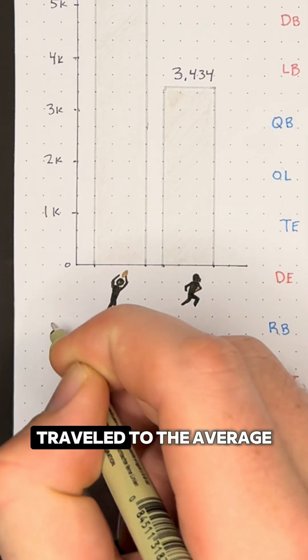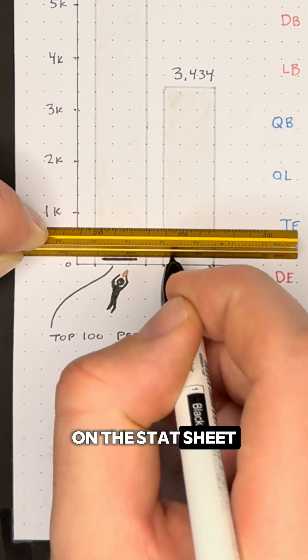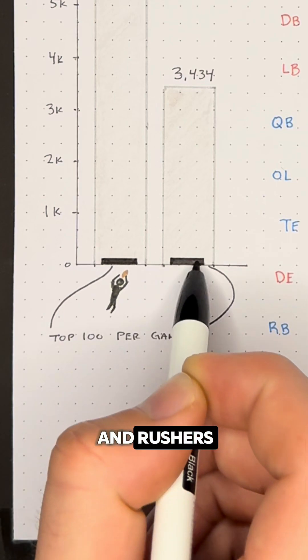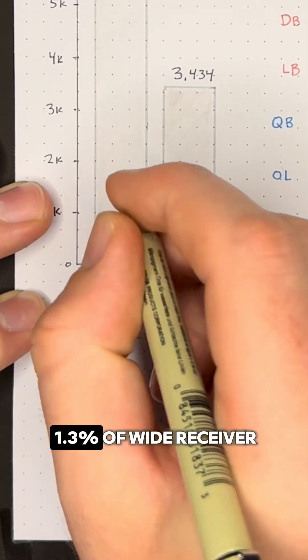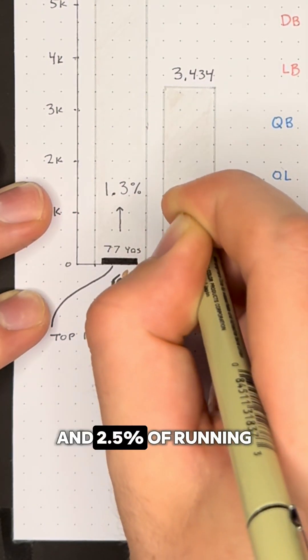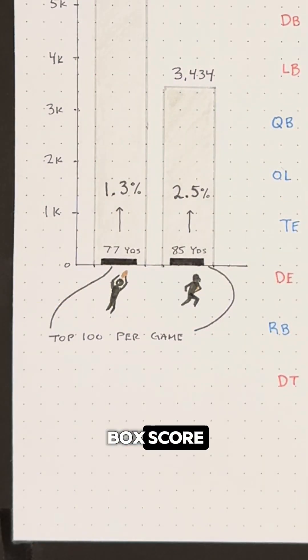When you compare those distances traveled to the average yards per game on the stat sheet for top 100 receivers and rushers, you see that just 1.3% of wide receiver yards traveled and 2.5% of running back yards end up in the box score.